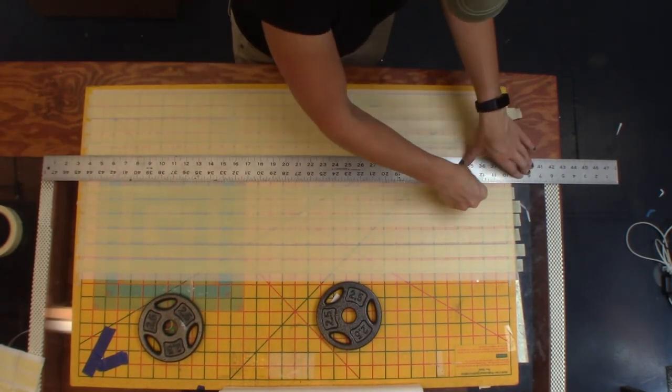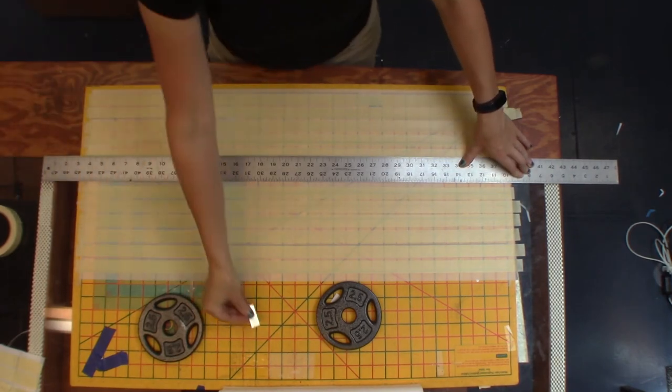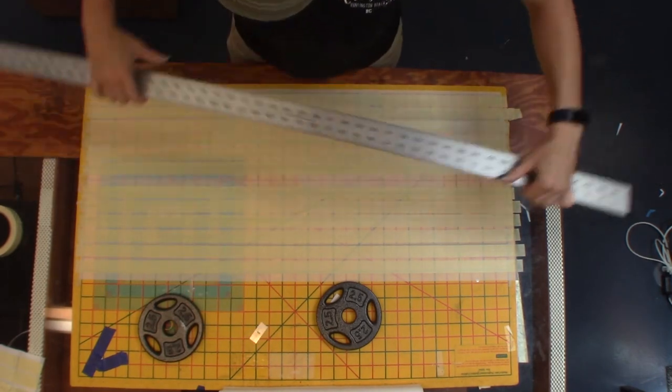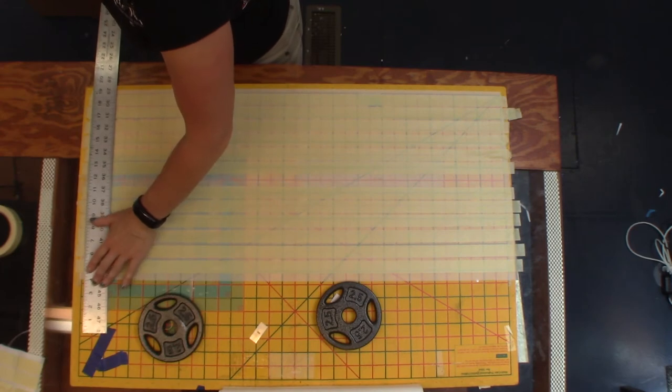Next, I cut lengthwise along the parchment paper in the gap I created between rows. This makes the tape sets of six strips of tape.